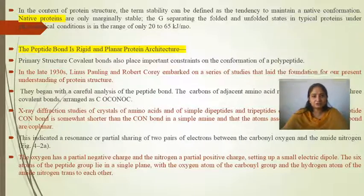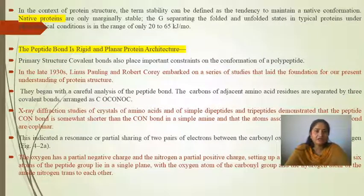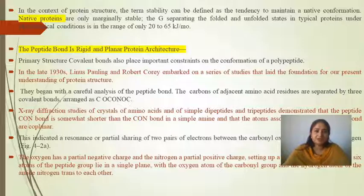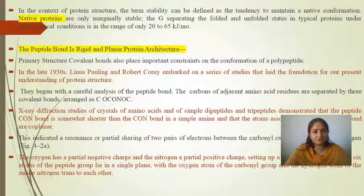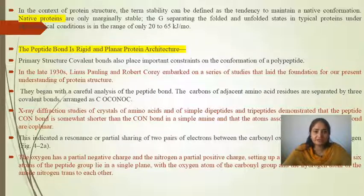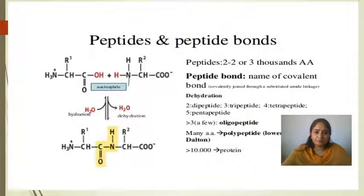In the context of protein structure, stability can be defined as the tendency to maintain a native conformation. Native proteins are only marginally stable. The peptide bond imposes an important constraint on the conformation of polypeptides. Pauling discovered the planar nature of the peptide bond. The C=O and N-H bond together constitute the peptide bond, formed when the COOH group of one amino acid and the NH2 group of another undergo a condensation reaction, releasing water.